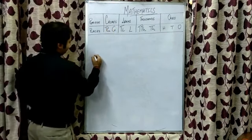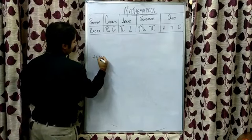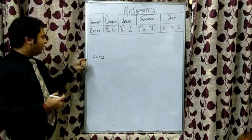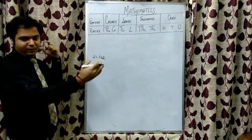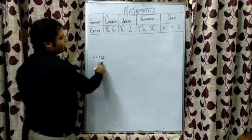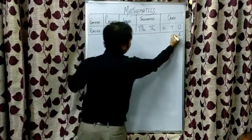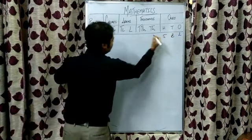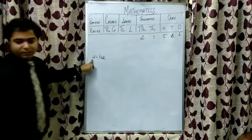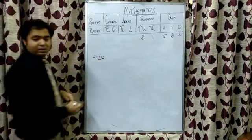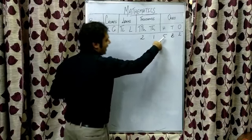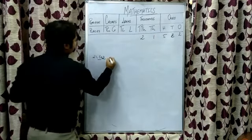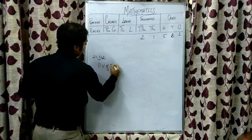Let us take an example. Suppose we have the number 21,562. We will start filling the digits of this number from right to left, one digit at a time. The extreme right digit 2 comes under ones place, 6 under tens place, 5 under hundreds place, 1 under thousands place, and 2 under ten thousands place. Suppose I ask you: what is the place value of 5 in this number? We just look at where 5 is lying in the place value chart. Since 5 is lying under hundreds place, the place value of 5 will be 500.